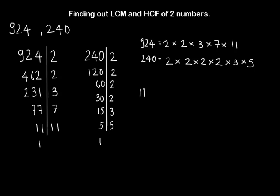Now to find out the highest common factor, we need to do a simple thing: just find out the common factors from 924 and 240. We have a 2 over here, 2 over here, 2 over here, one more 2, one more 2 over here. Now 3 is common between 924 and 240. So HCF is simply the multiplication of common factors of 2 numbers. So we get 2 into 2 into 3, which is equal to 12. Finding out HCF is pretty simple.